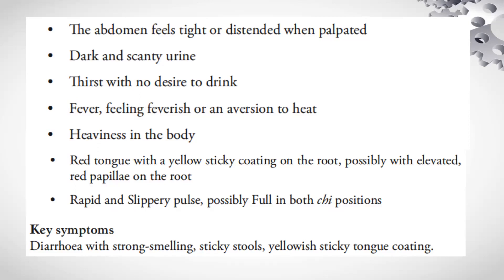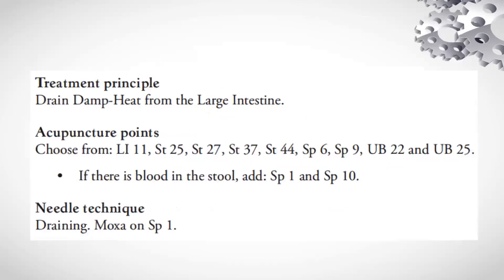Key symptoms are diarrhea with strong smelling, sticky stools and yellowish sticky tongue coating. Treatment principle: drain damp heat from the large intestine. Points: LI11, Stomach 25, Stomach 27, Stomach 37, Stomach 44, Spleen 6, Spleen 9, Bladder 22, and Bladder 25. If there is blood in the stool, add Spleen 1 and Spleen 10. Needle technique: draining. Moxa on Spleen 1.